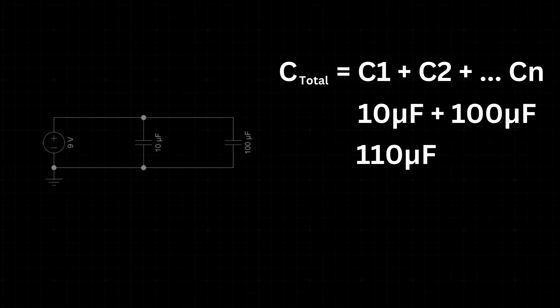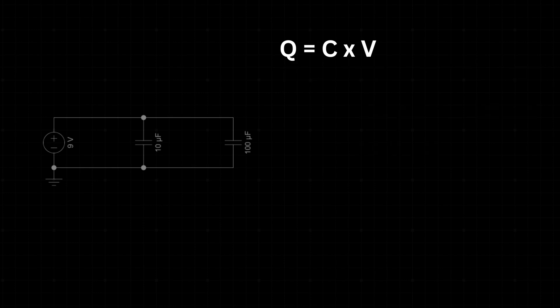Now let's talk about the charge stored in these capacitors. In a parallel circuit, the voltage across each capacitor is the same as the battery voltage, which is 9 volts in our case. To find the charge stored in a capacitor, we use the formula Q equals C times V, where C is the capacitance of the capacitor in farad and V is the voltage across the capacitor in volts.